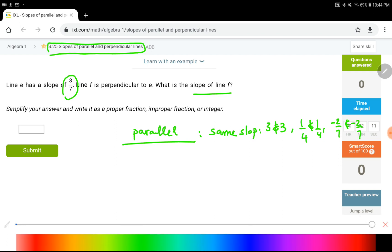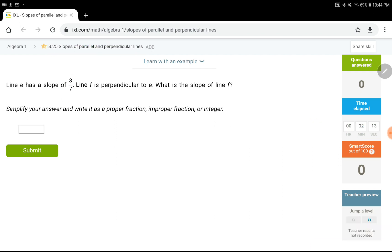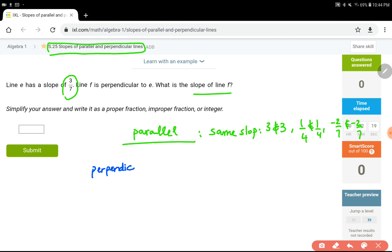Another concept is having perpendicular lines. In this case, they are going to be negative reciprocal.